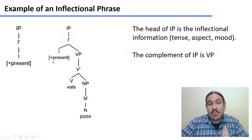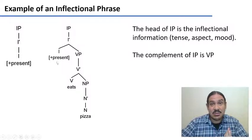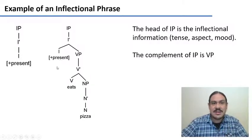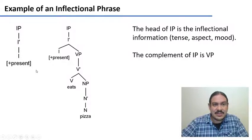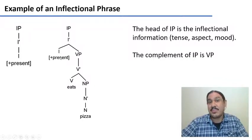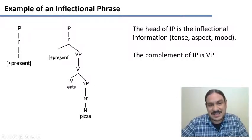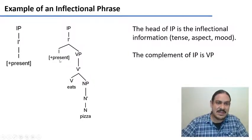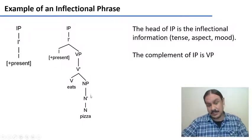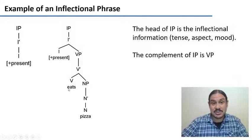If there's no word that has an inflection like 'will,' 'can,' or 'did,' you need to use a feature to indicate the inflection. For example, the verb 'eats' is in the present tense, so the head of the inflection is going to be [+present tense]. Then for the inflectional information to make sense, it needs a verb and a direct object — 'eats pizza.' It can also just be a verb like 'swims.'